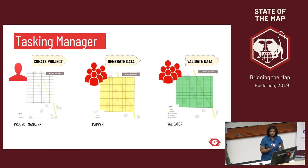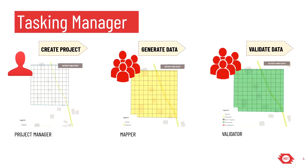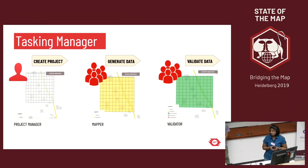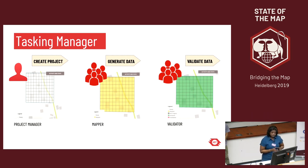I want to walk you through the workflow. The workflow is generally in three stages within the Tasking Manager: first is the project creation, then the data generation, and finally the quality check, which we term as the validation. Each of these stages is handled by mappers with different roles. For example, there is a project manager who sets up projects to address particular information needs — it could be to map out buildings that aids humanitarians to understand population distribution, or to trace roads that help teams plan transport routes. A larger HOT activation can consist of multiple individual projects.